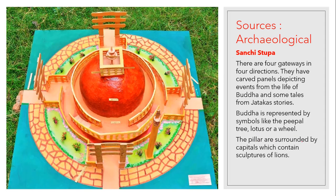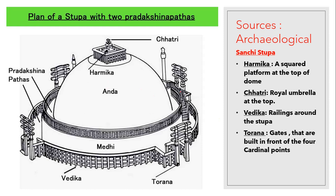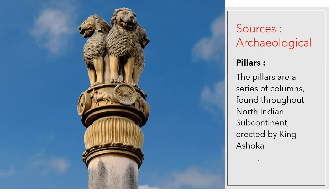The pillars are surrounded by capitals containing sculptures of lions. For the exam, if you describe the Sanchi Stupa, you can mention: the Harmika — the top square shape; the Chatri — the royal umbrella at the top; the Vedika — the railings or fencing all around; and the Toranas — the four gates facing the four cardinal directions: east, west, north, and south.